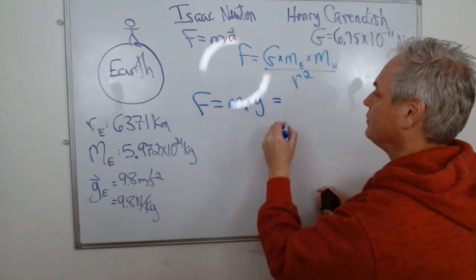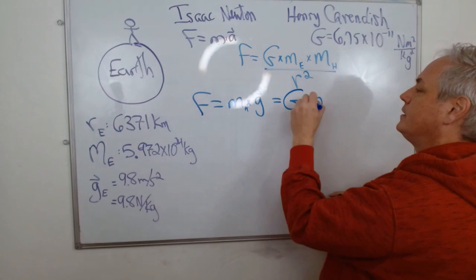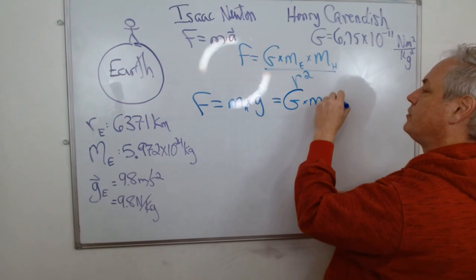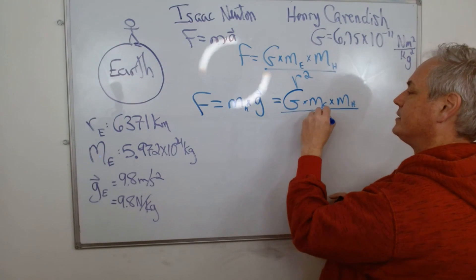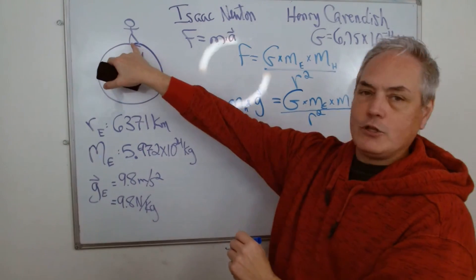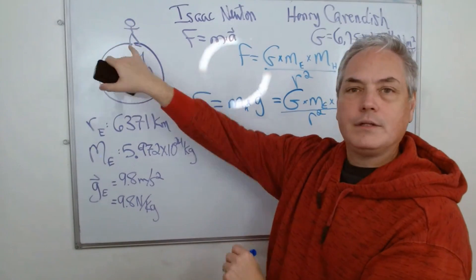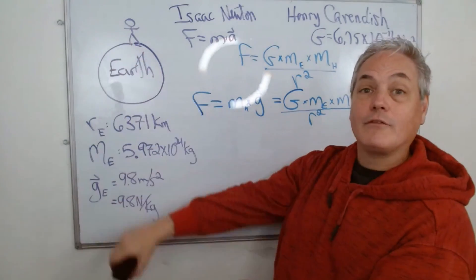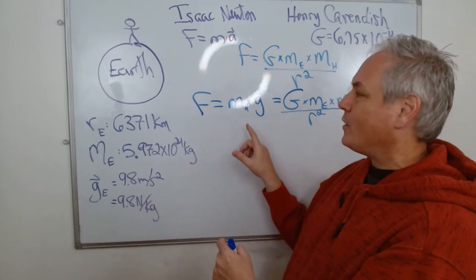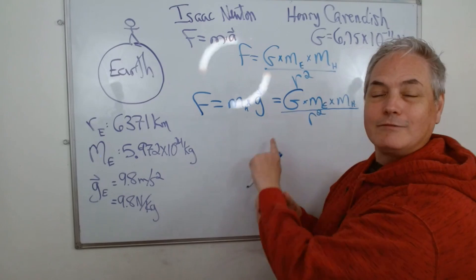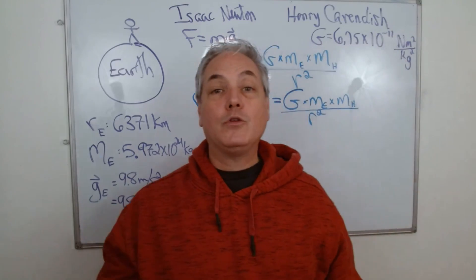Now we know that through the second formula, G times the mass of Earth times the mass of the human over the radius squared, where the human or the mass is at the surface of the planet. So here through this we can figure out through deductions what is the value of G right here.